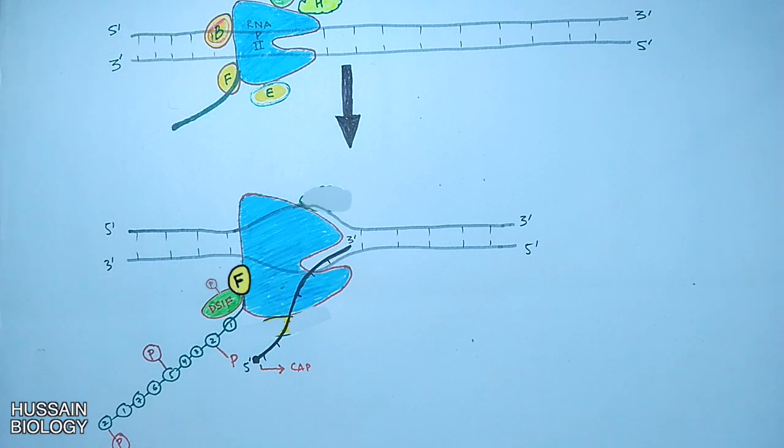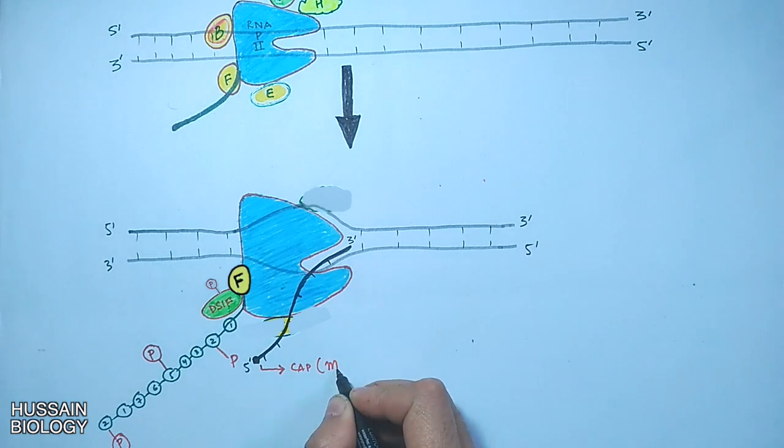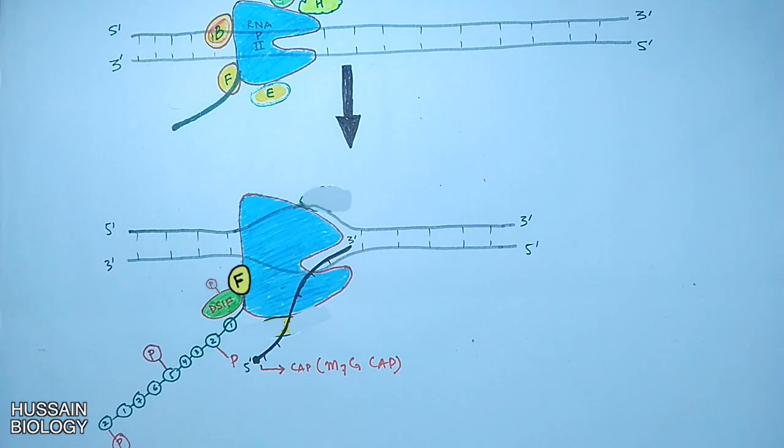And do note that 7-methylguanosine cap is added co-transcriptionally. The capping enzyme is recruited towards the transcription machinery by transcription factor H and also serine 5 phosphorylation stimulates capping enzyme recruitment and SPT5 subunit of DSIF has been shown to mediate the RNA capping.